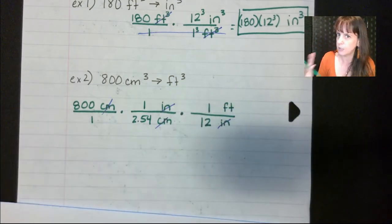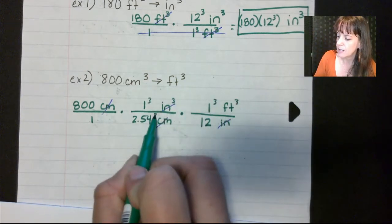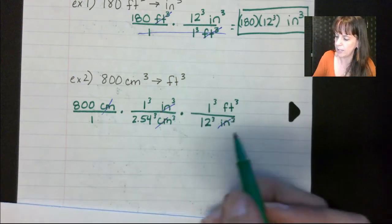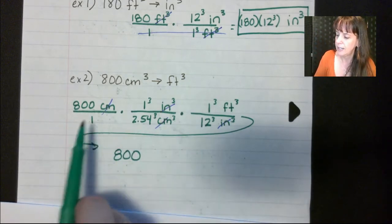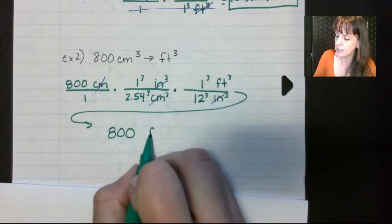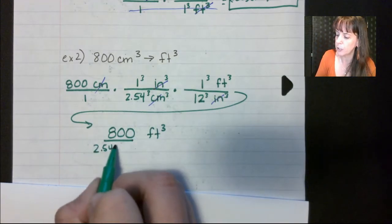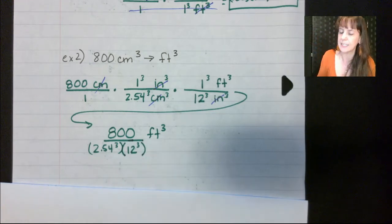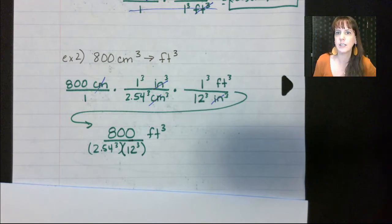So you cube everything. Do not cube that 800 — just cube everything else. Upstairs we have 800 times one times one, because one to the third power, and the unit is feet cubed. Downstairs we have 2.54 cubed times 12 cubed.